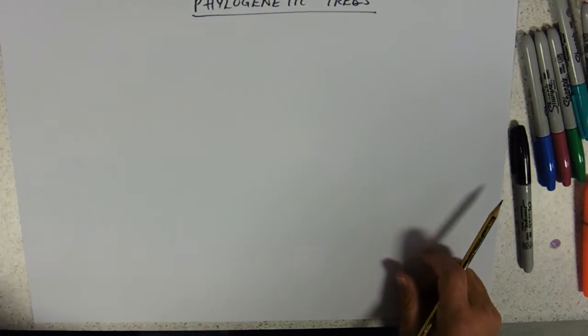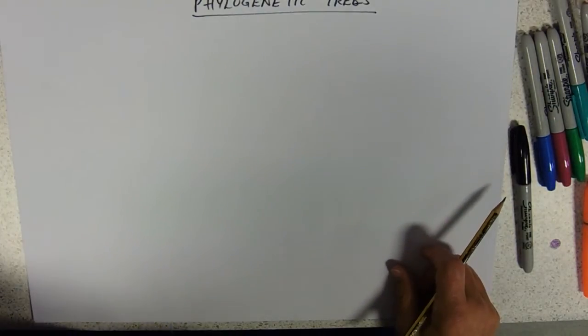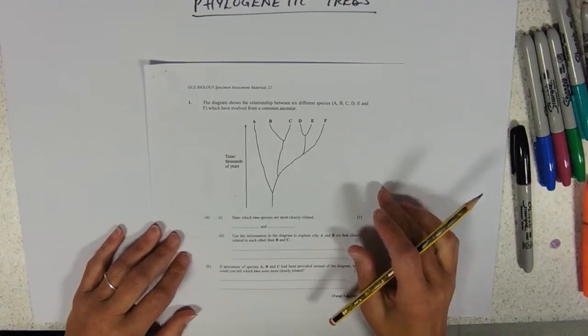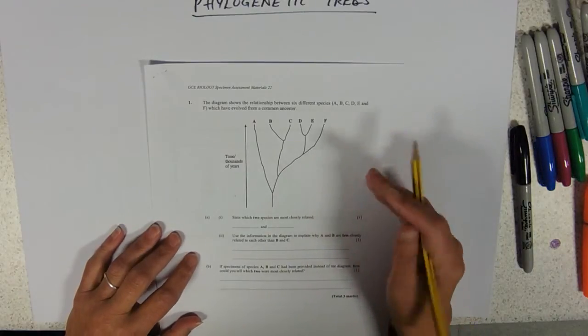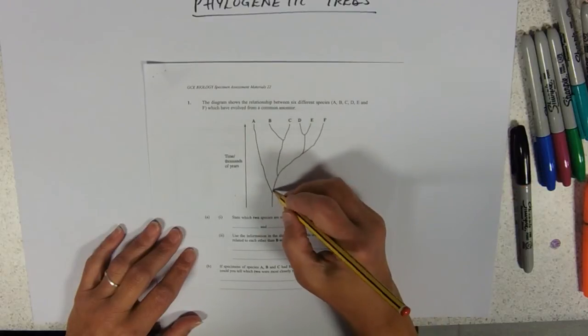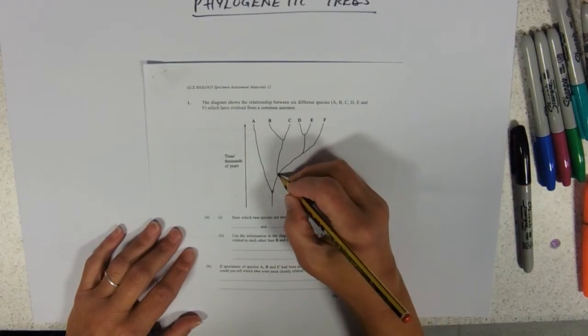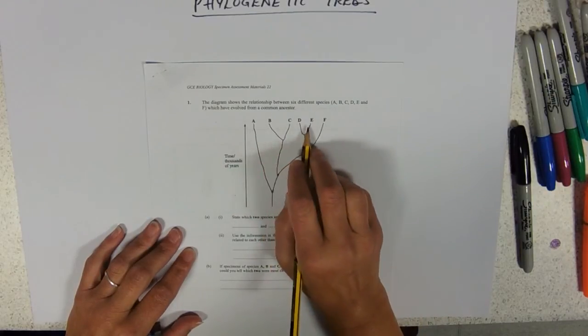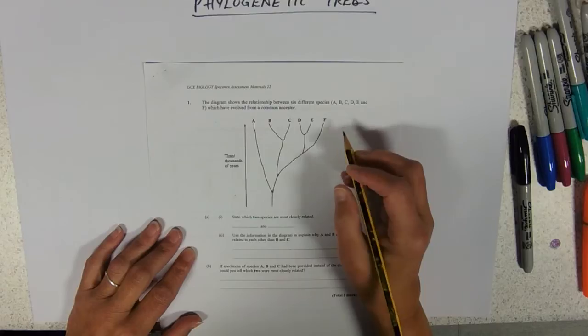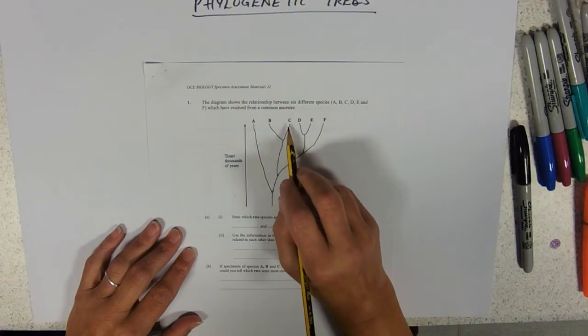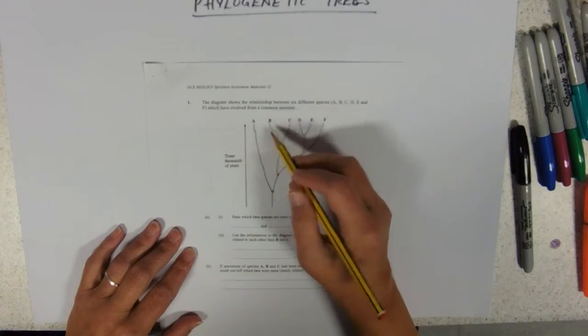Just sticking with phylogenies, the other way that you see phylogenetic information is on a little tree of life like this, with a time axis on it, and these branches here represent common ancestors. So, here is the common ancestor of all six of those organisms. This one here is the common ancestor of B, C, D, E, and F, but not of A. So, these five are more closely related to each other than they are to A.